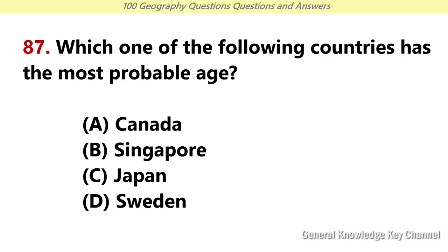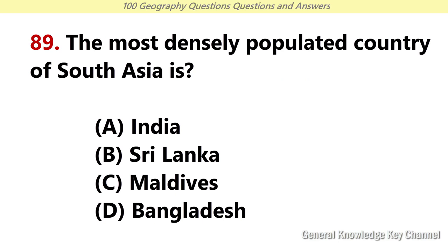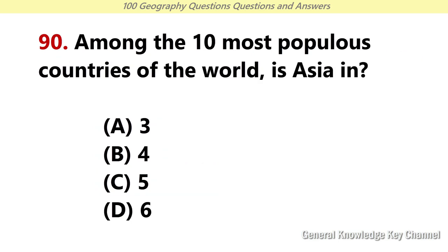Which one of the following countries has the most probable life expectancy? Answer C: Japan. Which one of the following has the world's largest livestock population? Answer C: India. The most densely populated country of South Asia is? Answer D: Bangladesh. Among the 10 most populous countries of the world, how many are in Asia? Answer D: 6.